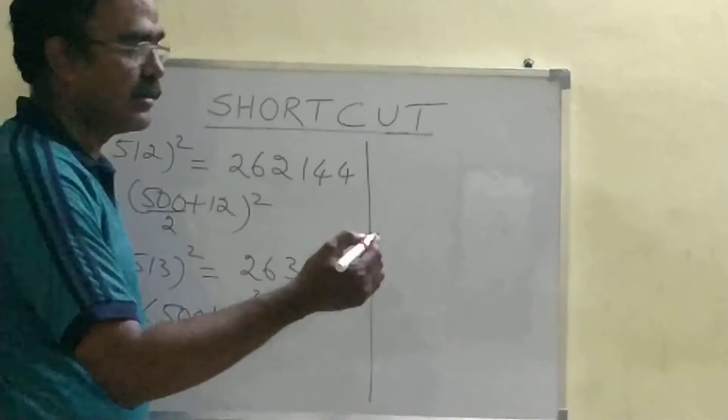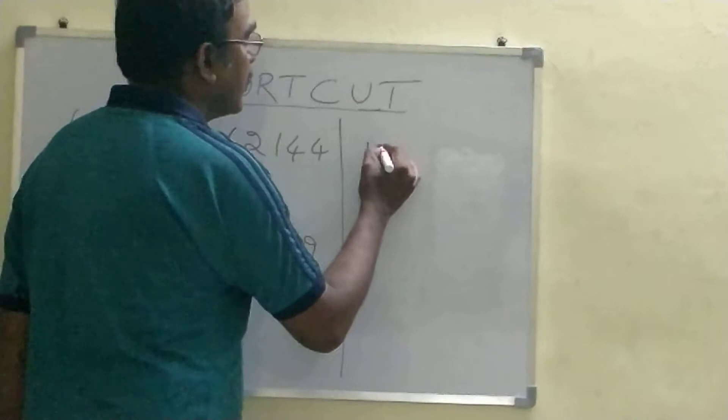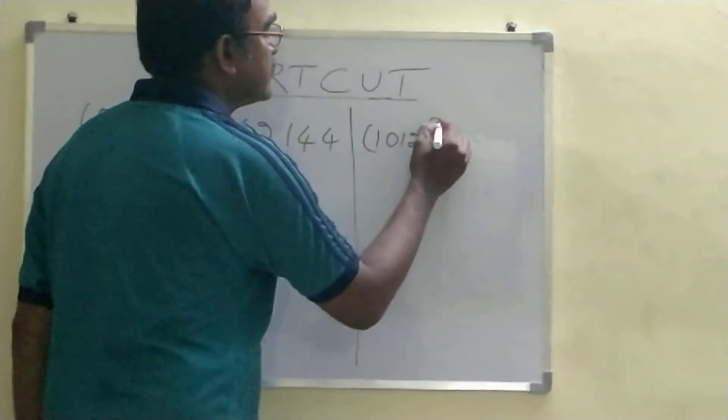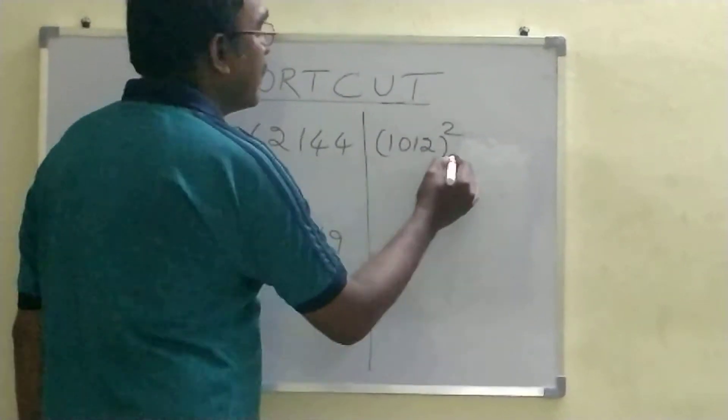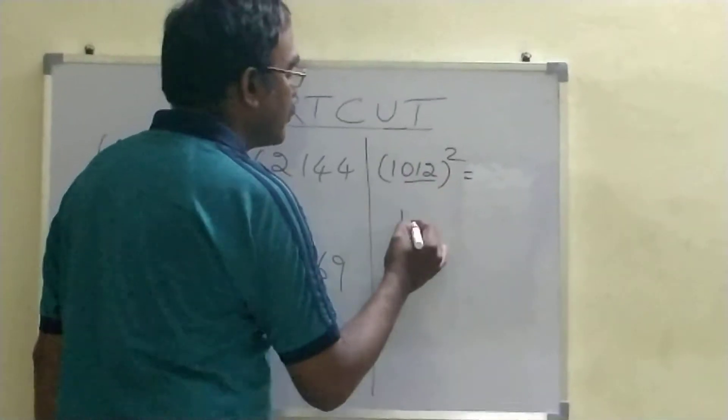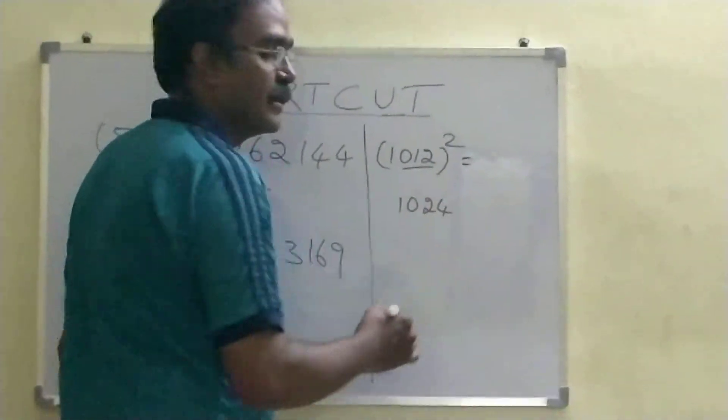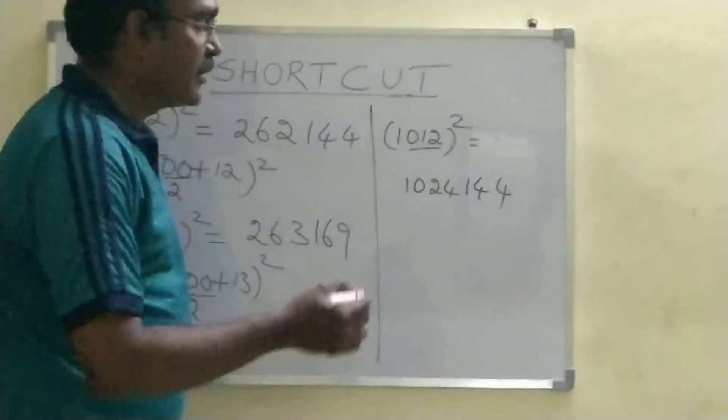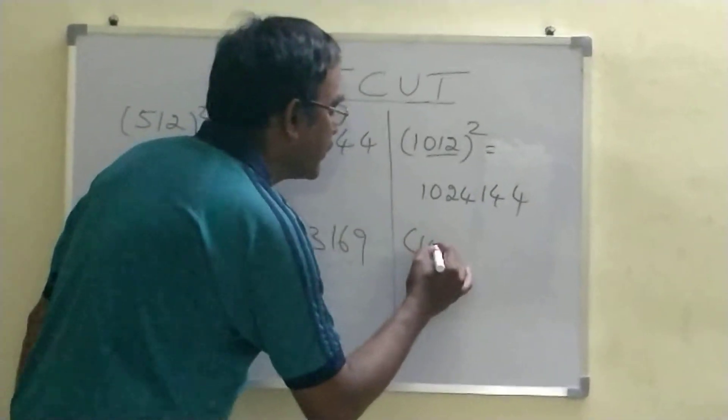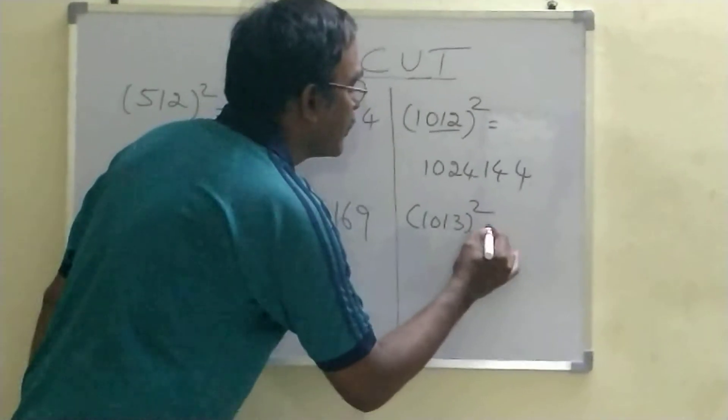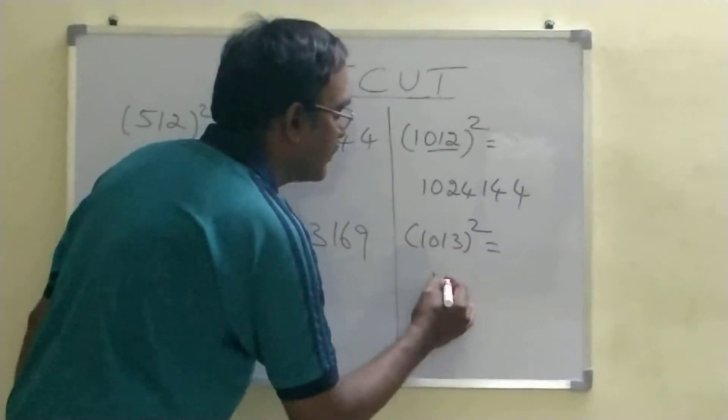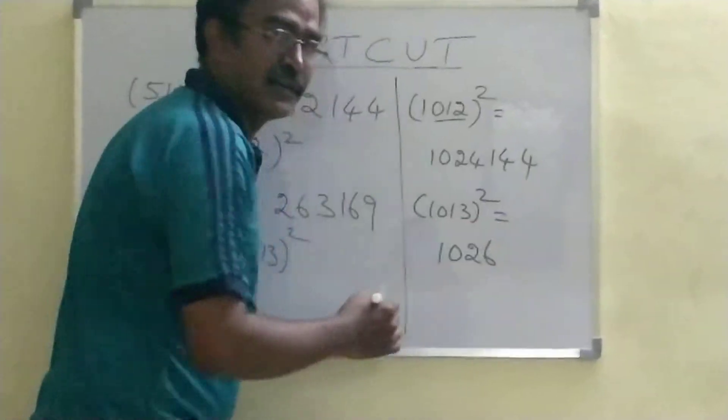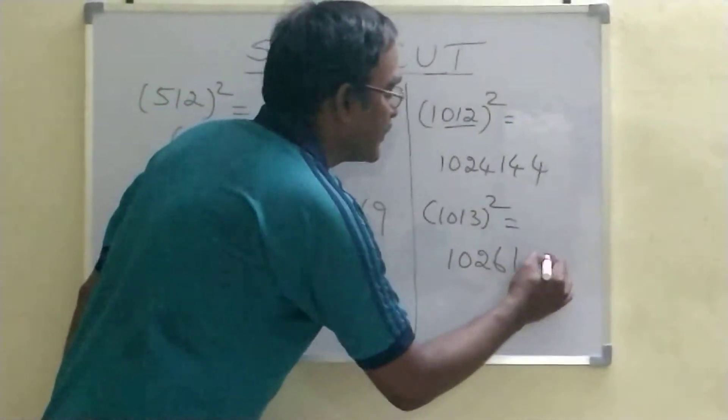And let's go for some more numbers. How to do this? 1112 whole square. 11 ones are 1. 12 plus 12, 24. And 12 square is 144. Let's go for one more. 1113 whole square. This 11 ones are 1. 13 plus 13, 26. And 13 square is 169.